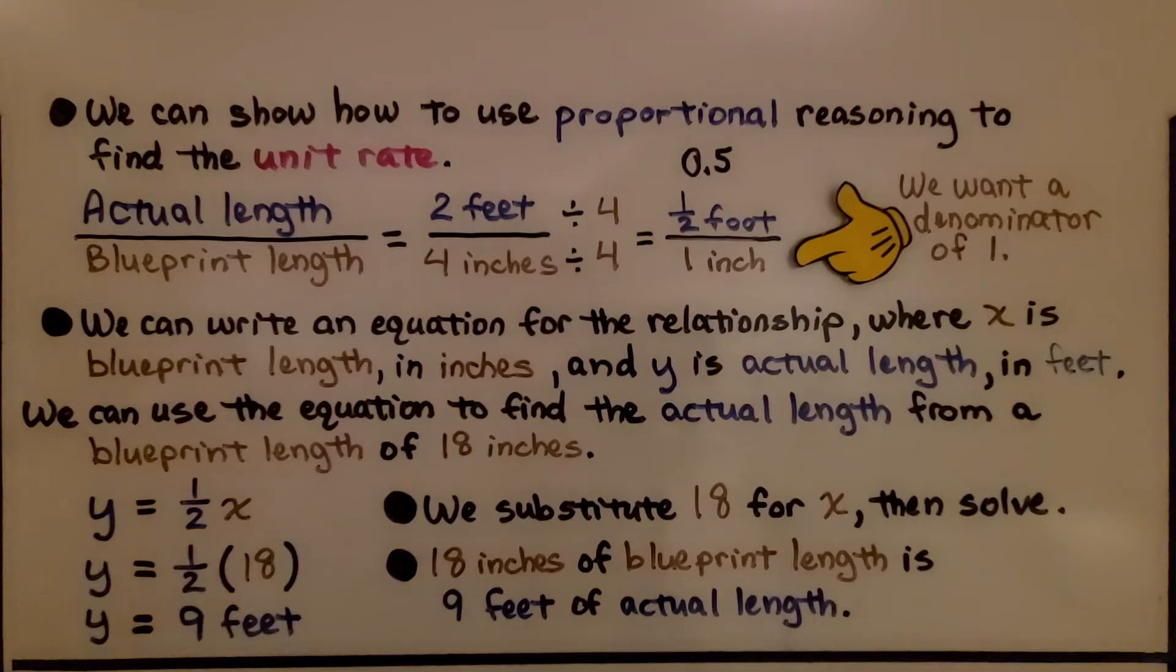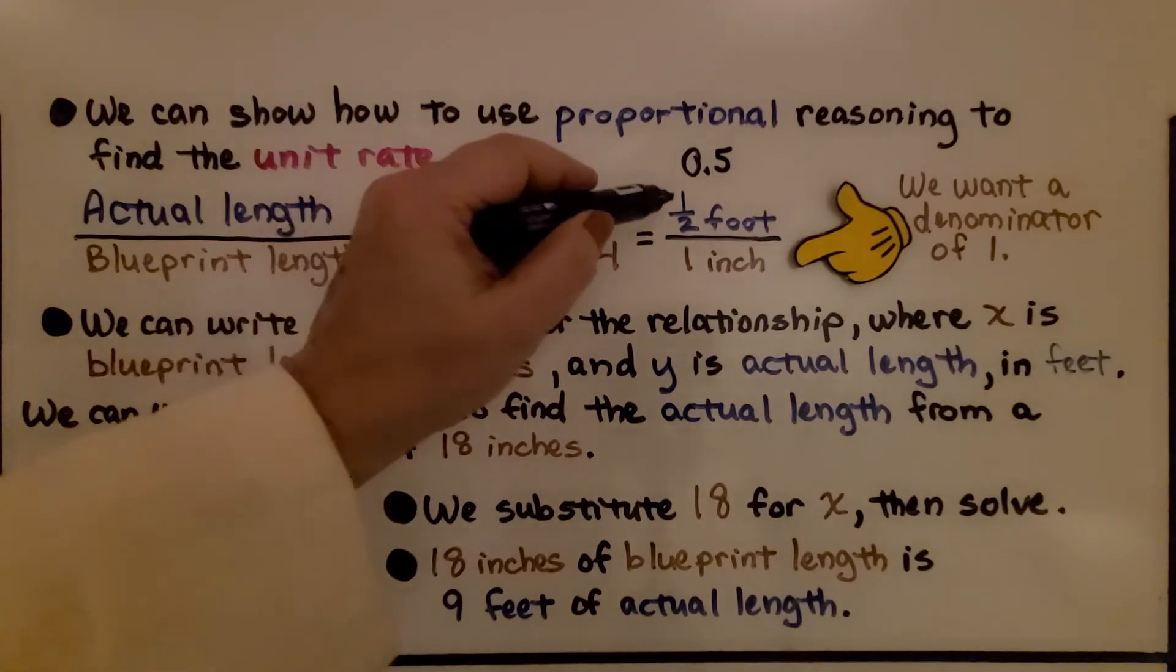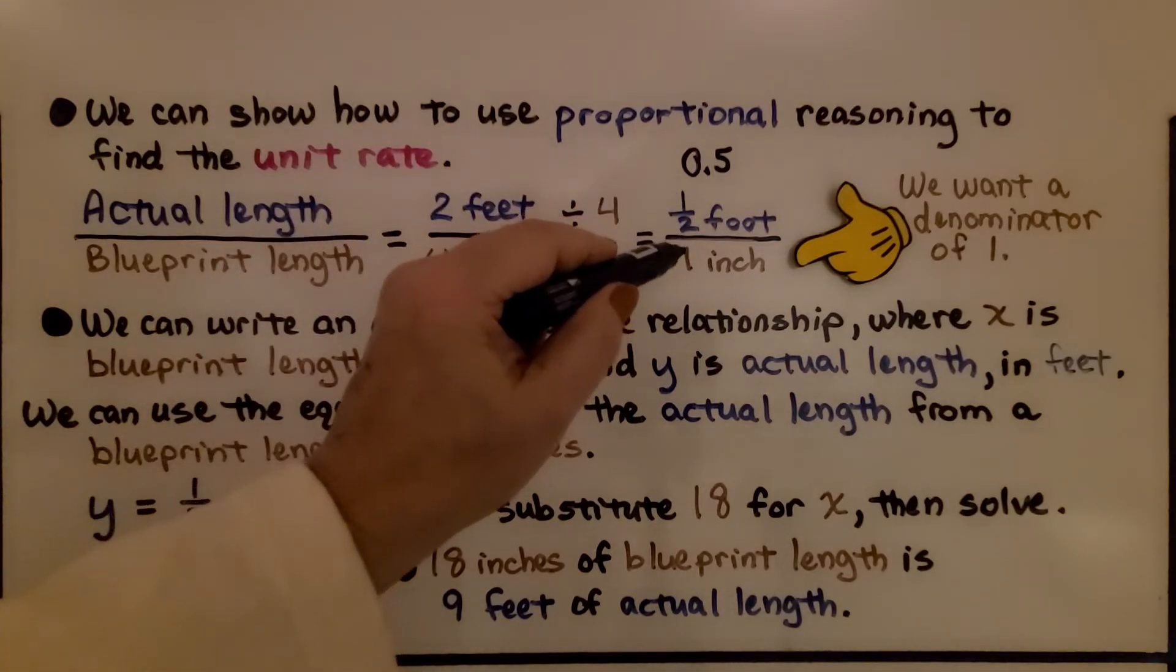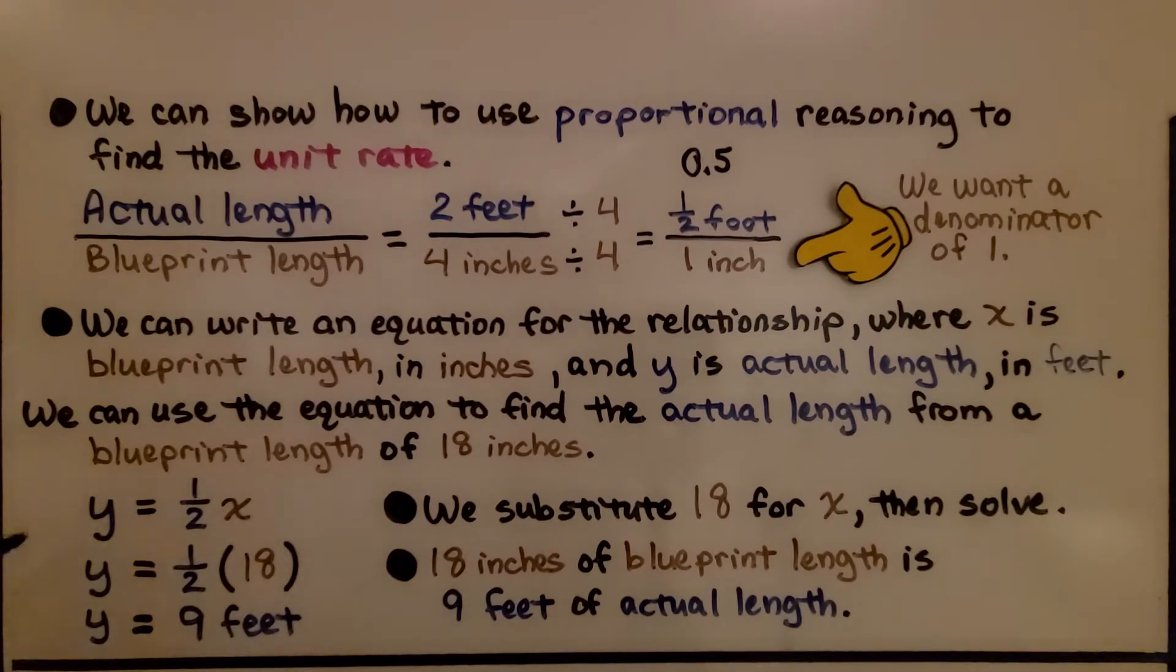We can write an equation for the relationship where x is blueprint length in inches and y is actual length in feet. We can use the equation to find the actual length from a blueprint length of 18 inches. So we use y, that's the actual length, is equal to half x. It's equal to half whatever the blueprint length is. We substitute 18 for x and then solve it. 18 times one half is 9. That would be 9 feet. 18 inches of blueprint length is 9 feet of actual length.